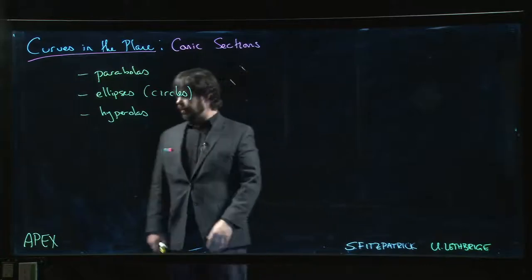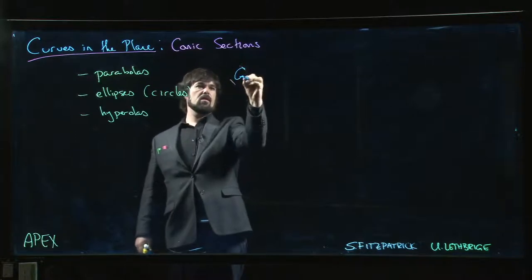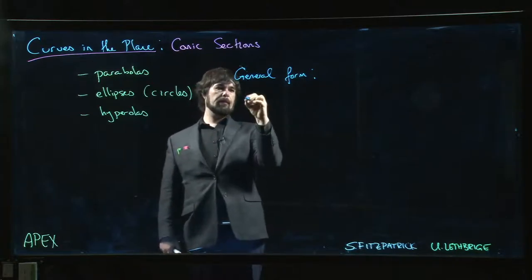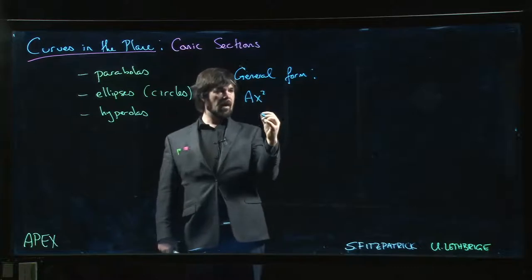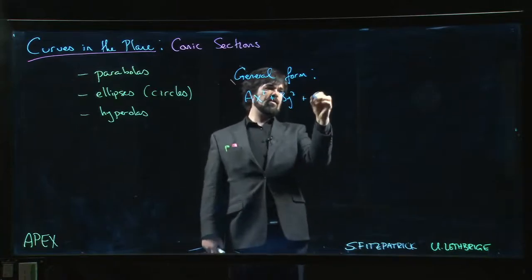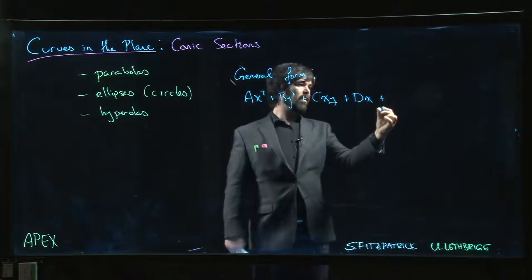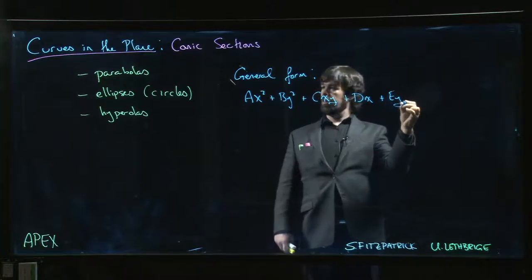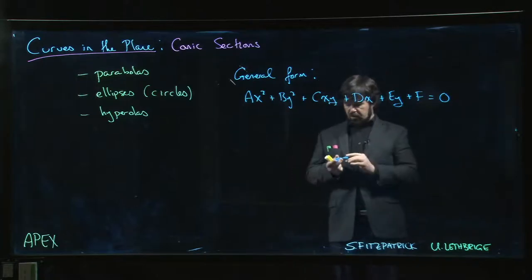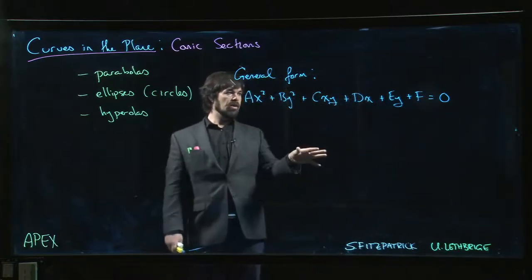So all of them fit a general form. The general equation for all of the conic sections looks something like Ax² + By² and there might be a cross term like Cxy, and there could be a linear term in x, a linear term in y, and a constant term F. So the most general equation that defines a conic section looks something like this, and you can actually capture all possible cases with an expression of this form.